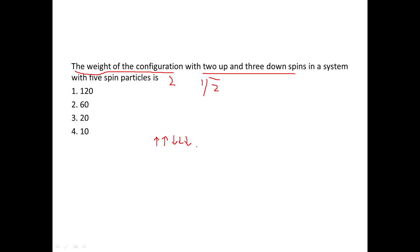Starting with particle one up: we can have one and two up, one and three up, one and four up, and one and five up — with the remaining three particles down in each case. That gives us four ways from this group.